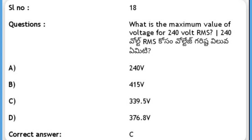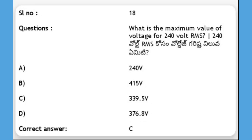Next, what is the maximum value of voltage for 240V RMS? Options: A) 240V, B) 415V, C) 339.5V, D) 376.8V. The answer is C, 339.5V.